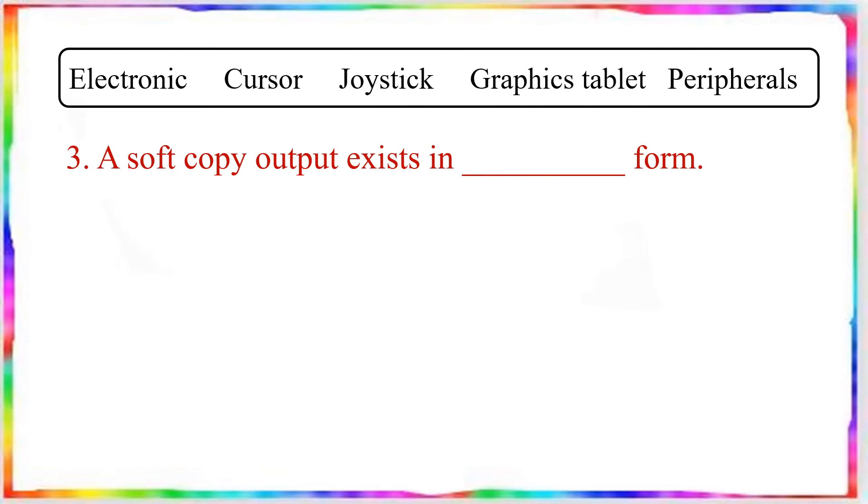Question number 3: A soft copy output exists in dash form. Answer: electronic form.